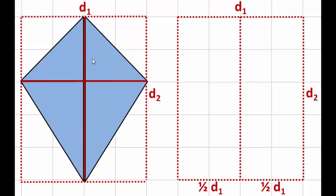And the idea here is we're going to move these four triangles that make up the kite into exactly half the area of the rectangle D1 by D2. So to make it a little clearer, we're going to color code our four triangles like so.